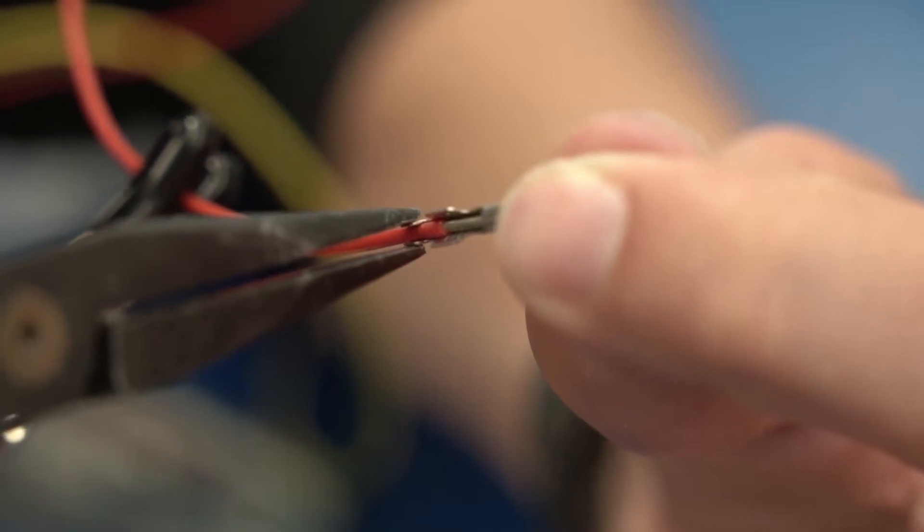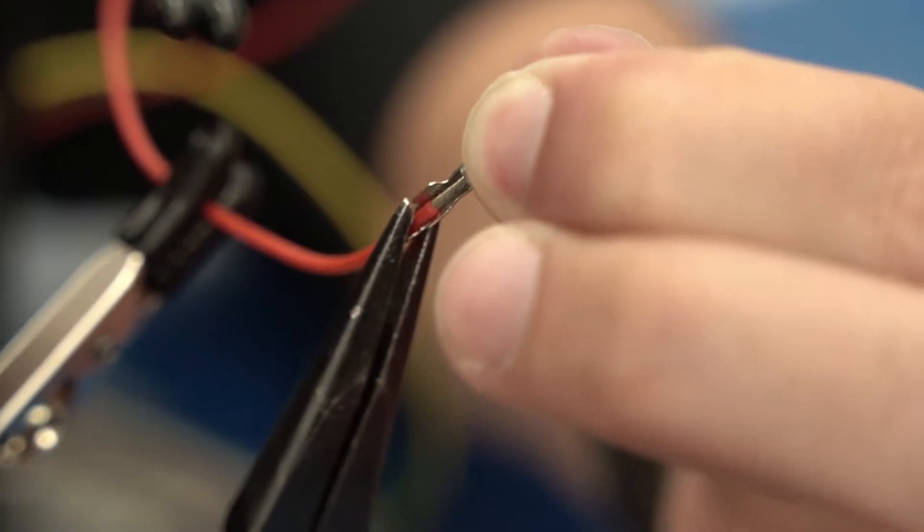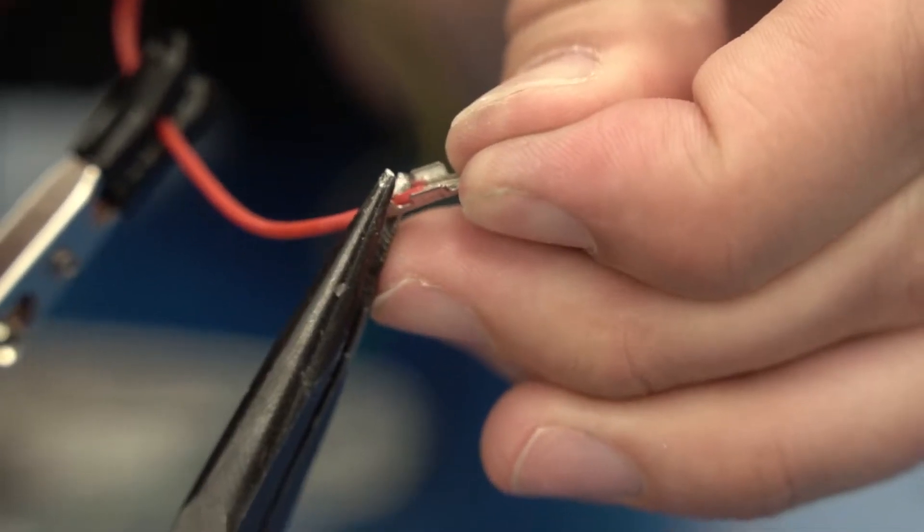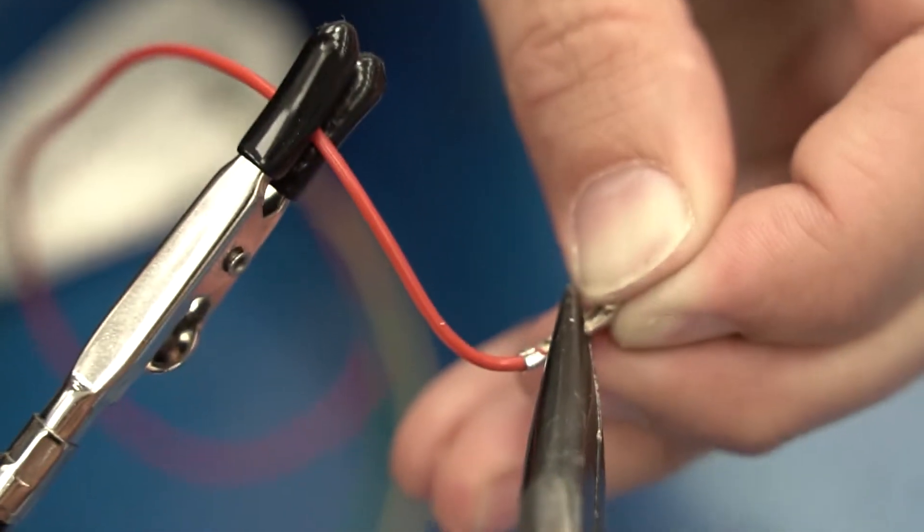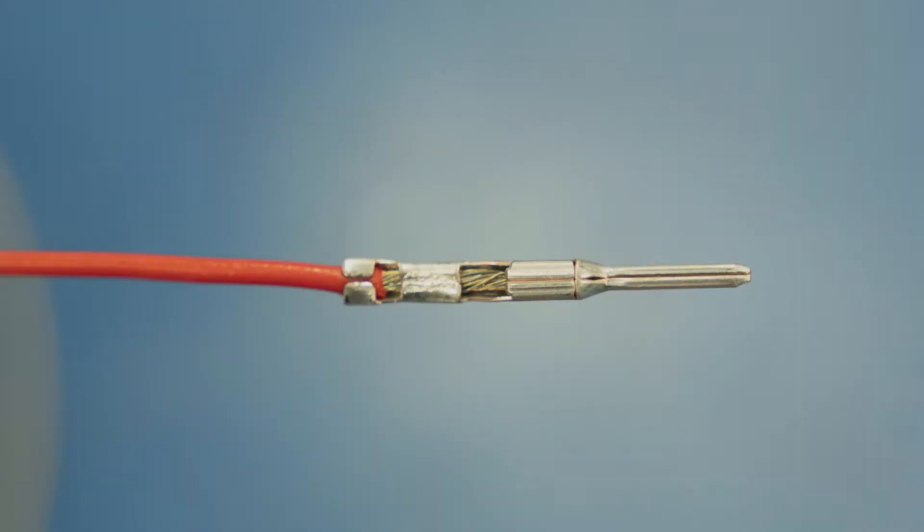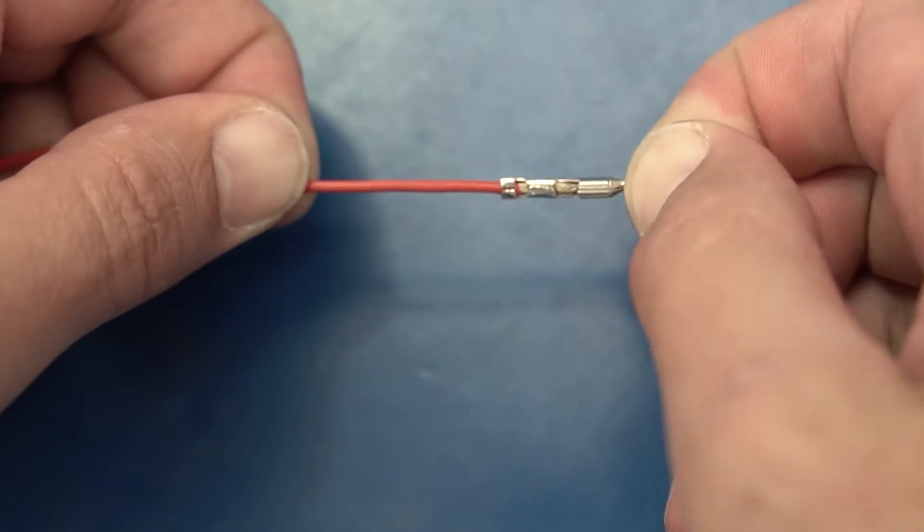Use the needle nose to crimp over the insulation section of the wire first. Once that's done you can crimp over the exposed wire. Here is an image showing a properly crimped connection. Do a pull test to make sure it's mechanically sound.